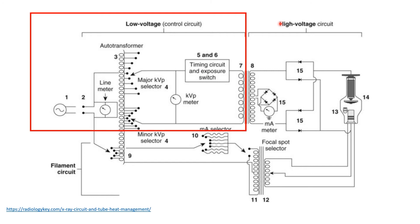AC power supply, the number one here, is provided by the electric power company. Next, is a main switch that controls the power to the control console. A line voltage compensator is present here, making sure that we have a precise voltage, usually 220 volts.